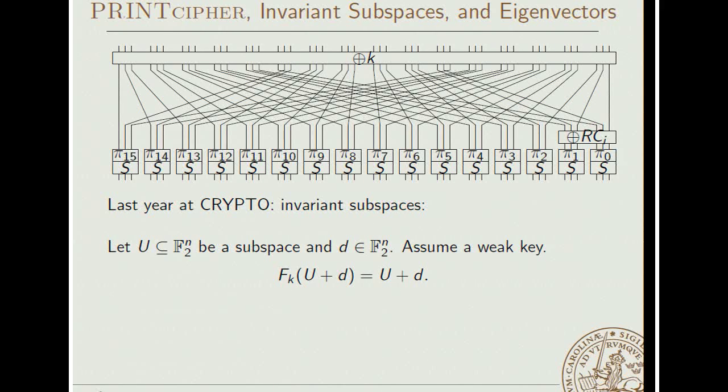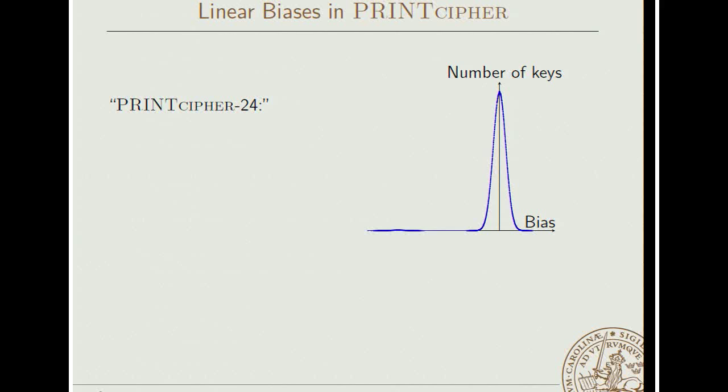Now, this is not affected by round counters or anything, so this holds for all rounds, meaning that if the plaintext is in this coset, then so is the ciphertext. And this happens for some keys, which we call weak keys. Now, this is clearly bad because it gives a distinguisher. You just try a few plaintexts and ciphertexts, and then you know if you have this type of key. So this extends to the entire PRINT cipher. Let's see what happens to the distribution of linear biases.